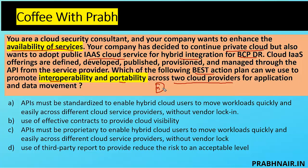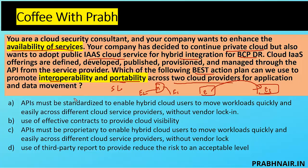Interoperability means a module is working in parallel with two environments simultaneously. Portability means an application is moving from one environment to another — shift and lift — permanently. Interoperability is using within two environments simultaneously, like roaming between providers. The question asks which best action plan promotes interoperability and portability across both cloud providers. Option A: APIs must be standardized to enable hybrid cloud users to move workloads quickly and easily across different cloud providers without vendor lock-in.